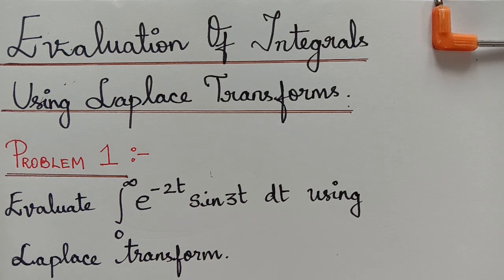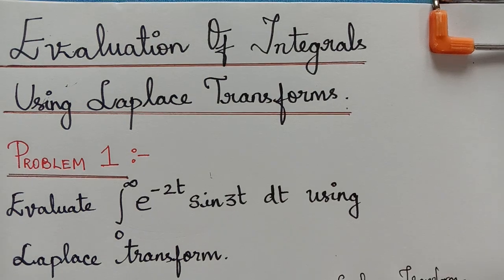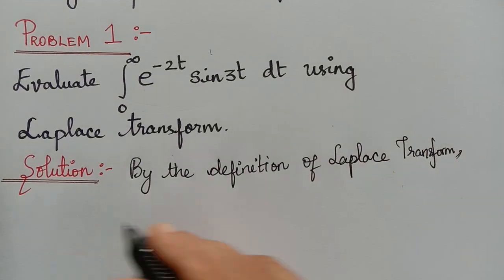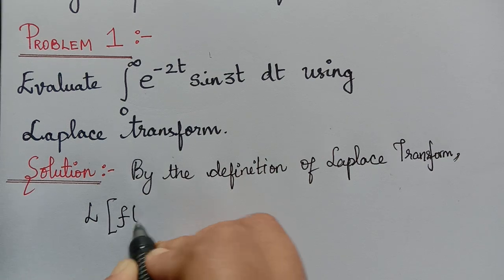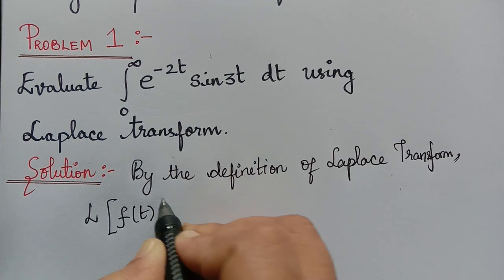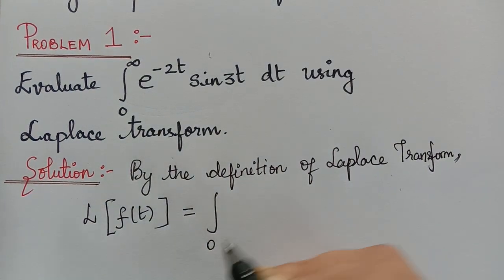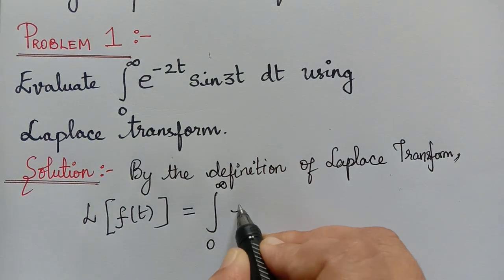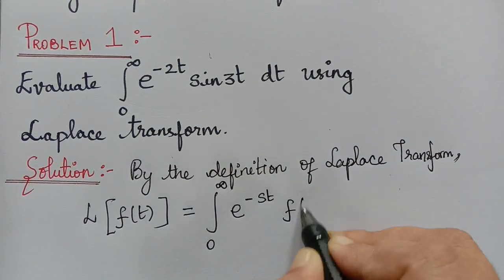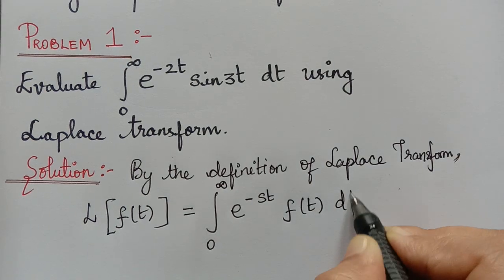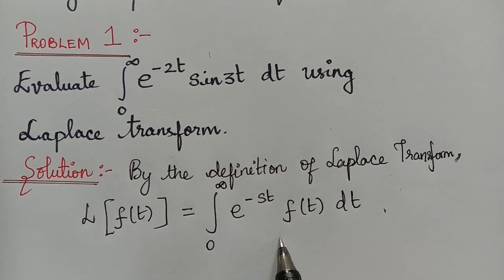By the definition of Laplace transform, we know that L of f of t is equal to the integral from 0 to infinity of e to the power negative st times f of t dt. We are going to use this now.